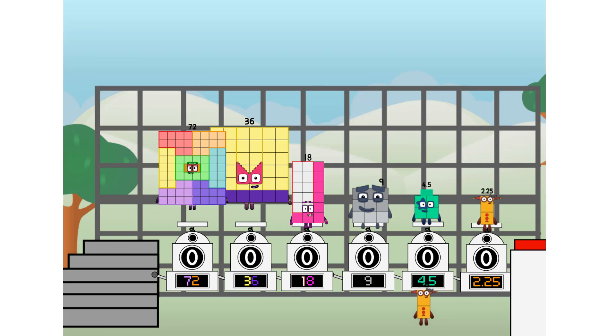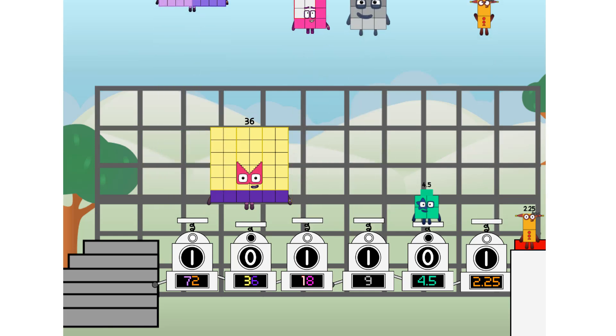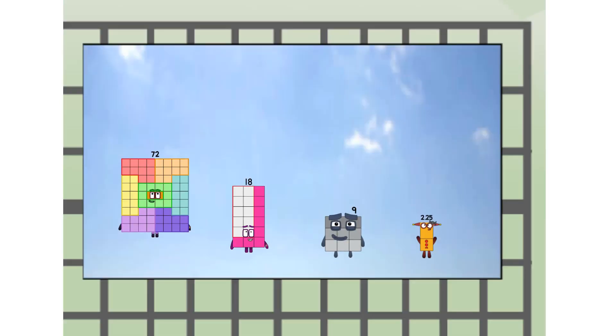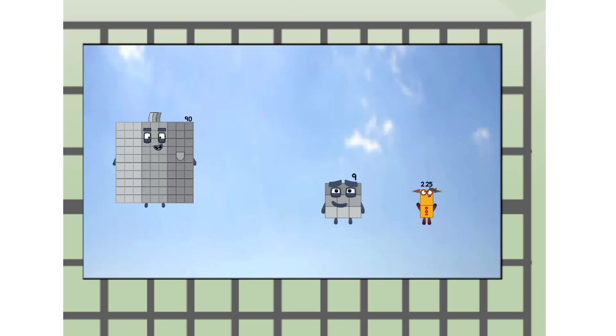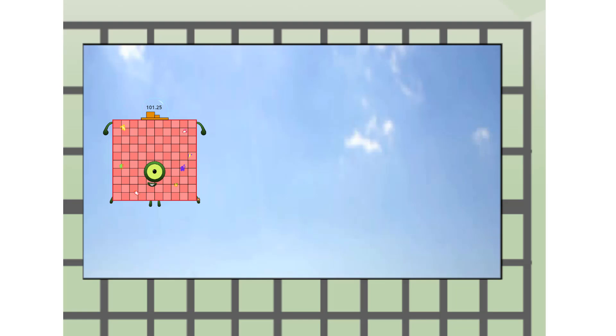Then you choose who's going up. One of me. And none of me. And one of me. And one of me. And one of me. And none of me. And one of me. And fire. 101.25 way up high.